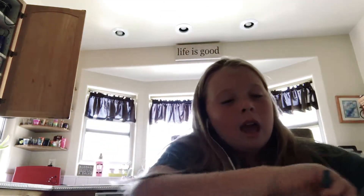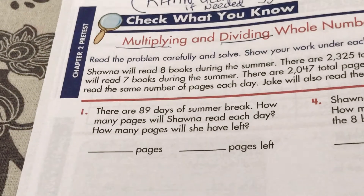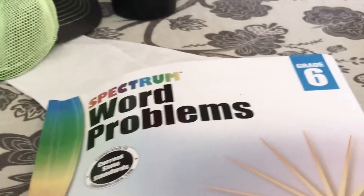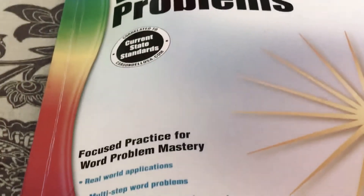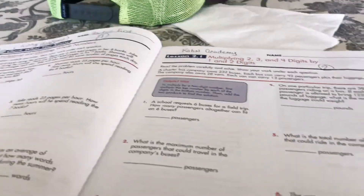I'm homeschooled so I'm doing this sixth grade math book thing, doing like six pages. They look like this. You have to read the top part. The particular book I have is Spectrum Word Problems — that's the brand — and in the very back it has special pages and whatnot.